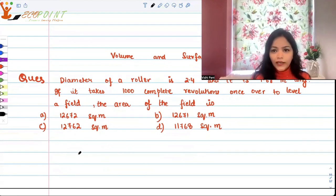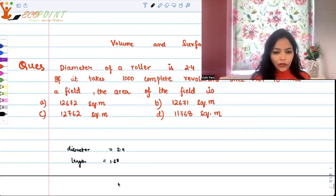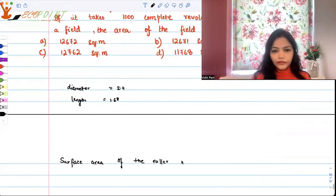We have diameter of the roller is 2.4 and length is 1.68 meters. So if I look at the surface area of this roller, the surface area of the roller would be 2πrh.